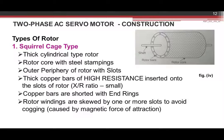There are three rotor configurations. The first type is the standard squirrel cage rotor — rotary cylindrical in shape, with a thick rotor core made up of steel stampings and thin laminations. The outer periphery is slotted to accommodate thick copper bars of high resistance, maintaining a small X/R ratio. Copper bars are short-circuited with end rings, and rotor windings are skewed by one or more slots to avoid cogging caused by magnetic force of attraction.